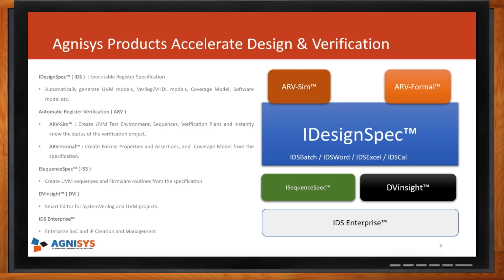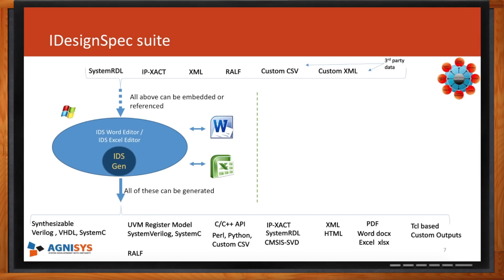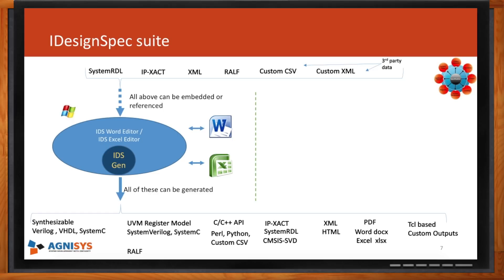iDesignSpec is an add-in into Word and Excel. Those add-ins allow you to create a specification that is correct by construction — the add-in takes care of overlaps and downstream problems. The dark blue box is the generator, which creates the various outputs. Within the editor you can import industry standards and custom files into Word and Excel, or you can reference them. So one IP could be in SystemRDL, another in IP-XACT, and you can refer to those files and generate outputs from them.